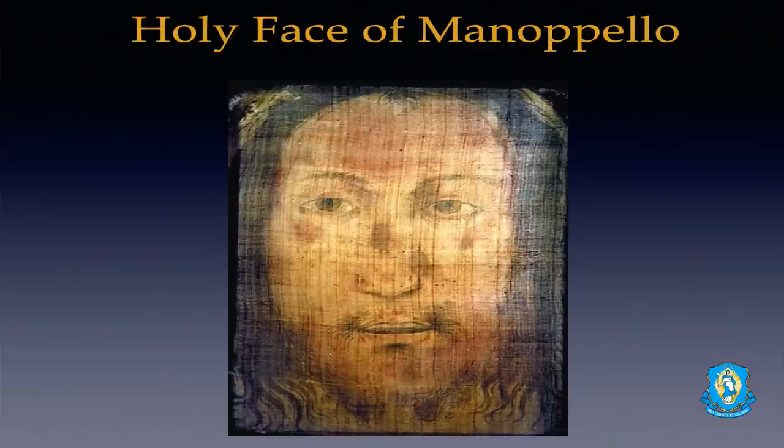Now, we have another relic cloth called the Veil of Manoppello. When I first saw this image, I thought it looked too cartoony — too phony. But then I saw a connection with this image. This image was from a cloth they believe was placed on the outside of the Shroud, actually placed on the head on the outside of the Shroud of Turin.